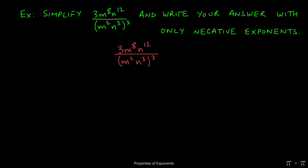In this question, we're asked to express our answer with only negative exponents after we've simplified 3m to the 8th, n to the 12th, all over m squared, n cubed, the quantity raised to the third power.